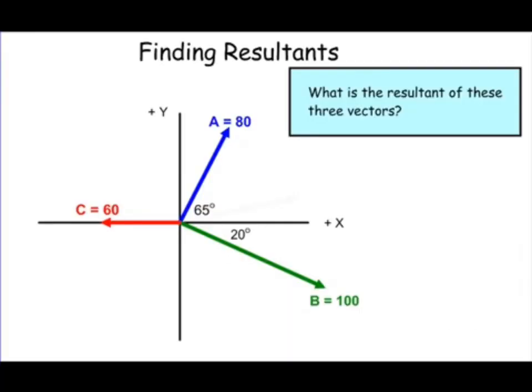When three or more vectors are present, you already know how to do this graphically, and this tutorial will show you how to do it using algebra. To review graphically, you simply place all the vectors head to tail.